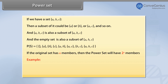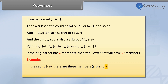Example: In the set A, B, C, there are 3 members — A, B, and C. So the power set should have 2 raised to the power 3, which is equal to 8, which it does.